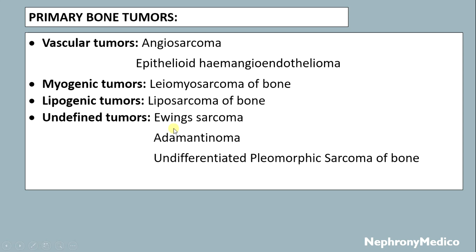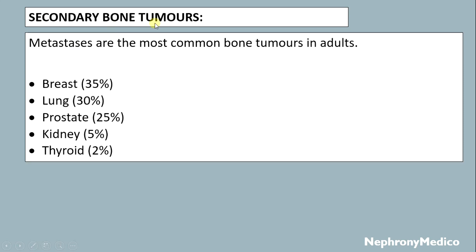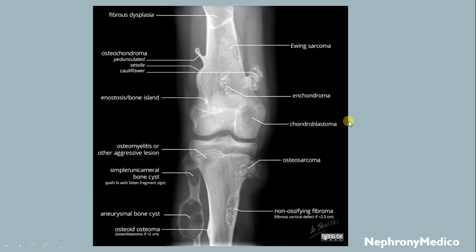Undifferentiated tumors include Ewing's sarcoma, adamantinoma, and undifferentiated pleomorphic sarcoma of bone. Secondary bone tumors — metastases — are the most common bone tumors in adults, arising from breast (35%), lungs, prostate, kidney, and thyroid.